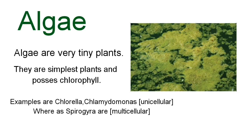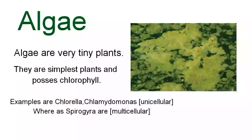Some algae are unicellular such as Chlorella and Chlamydomonas, whereas some are multicellular such as Spirogyra. The algal body is relatively undifferentiated and there are no true roots or leaves — unlike other plants, you will not find any kind of roots in algae. Algae have chlorophyll as their primary photosynthetic pigment and lack a sterile covering of cells around the reproductive cells.